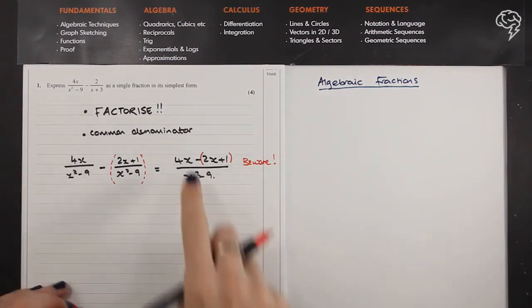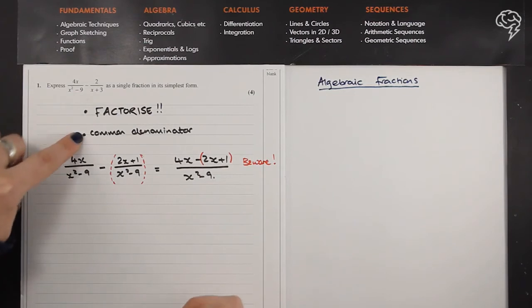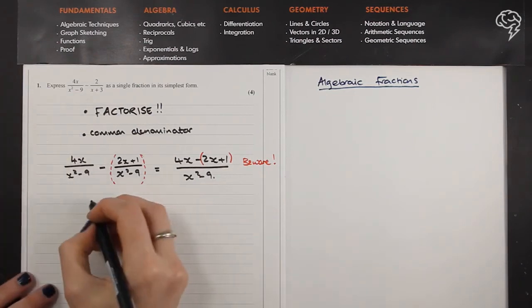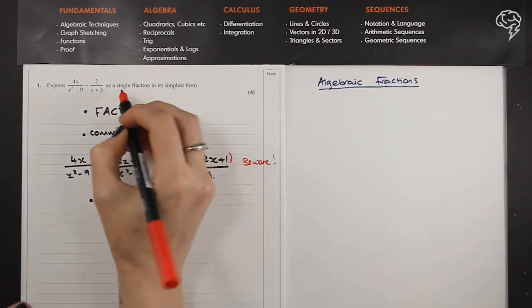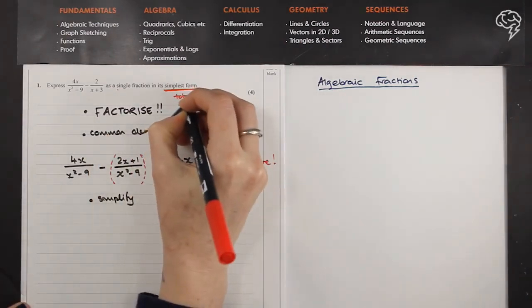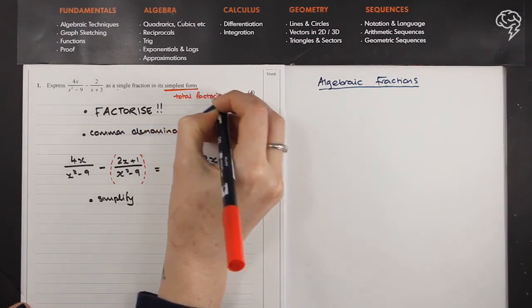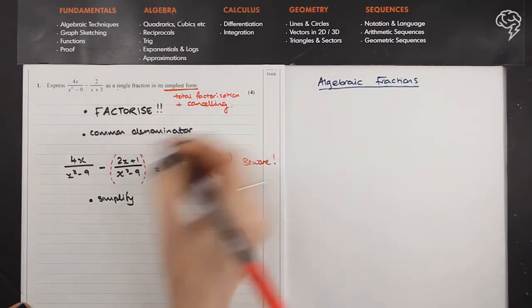Make sure that you are careful with your use of brackets. Factorize, make a common denominator, and then finally simplify. So where it says here single fraction in its simplest form, it's looking for total factorization, so no common factors should be left and any relevant cancelling from the top and the bottom.